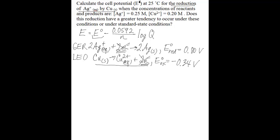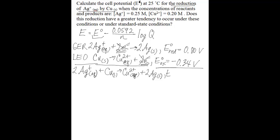The overall balanced redox equation is: two Ag⁺ (aq) plus Cu (s) goes to Cu²⁺ (aq) plus two Ag (s). Adding together the cell potentials for reduction and oxidation gives an overall standard cell potential of 0.46 volts. Now you have the balanced redox equation and the standard cell potential, which will be substituted into the Nernst equation to find the non-standard cell potential.